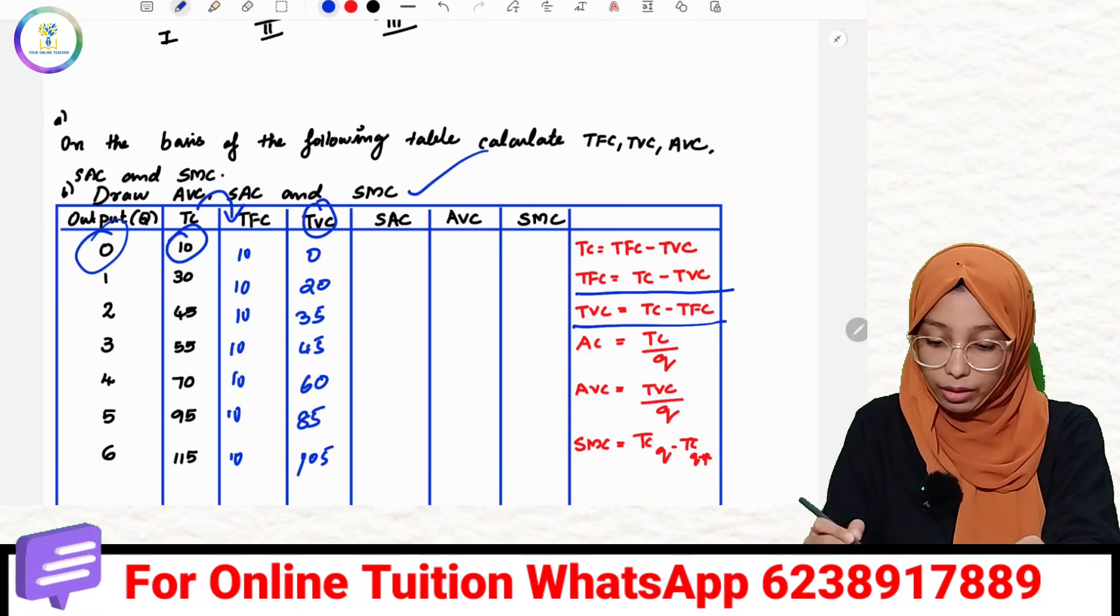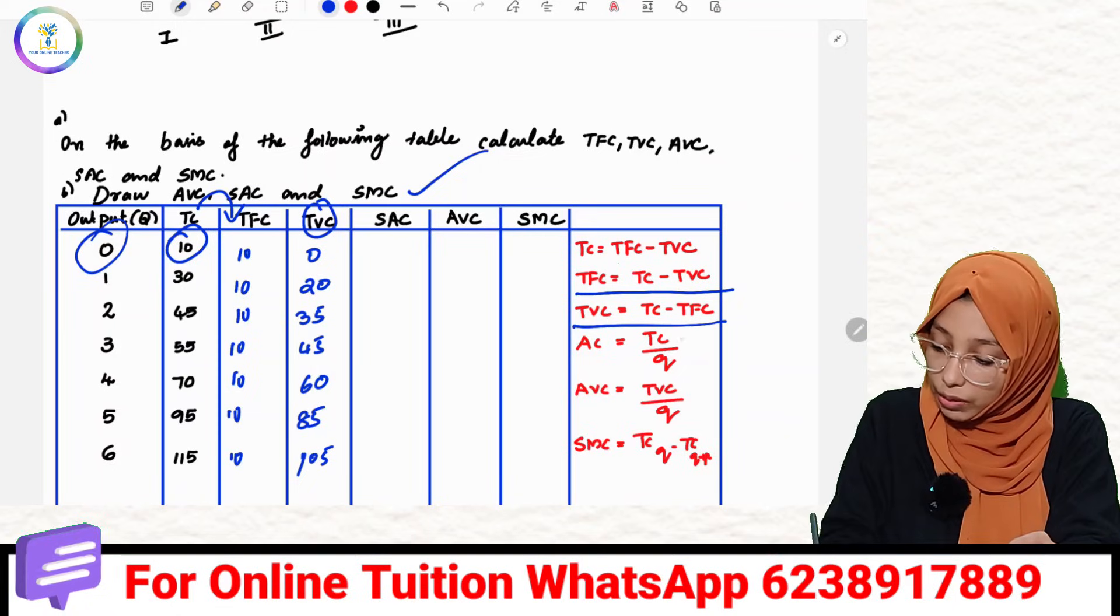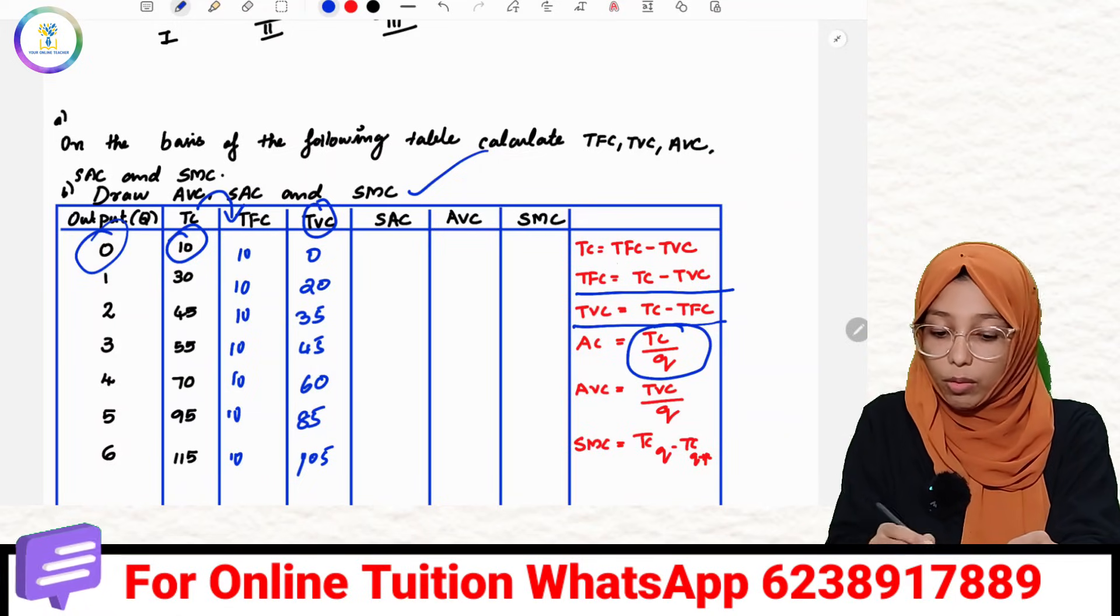Then TVC is completed. This is SAC, the average cost. The average cost equation is TLC by quantity, TLC divided by quantity.